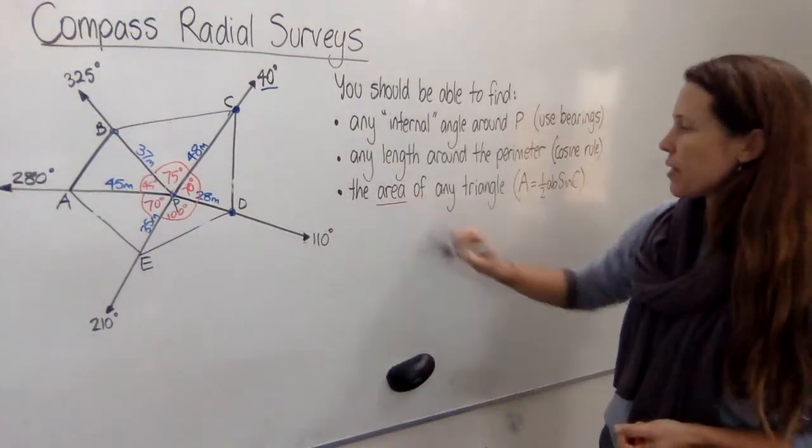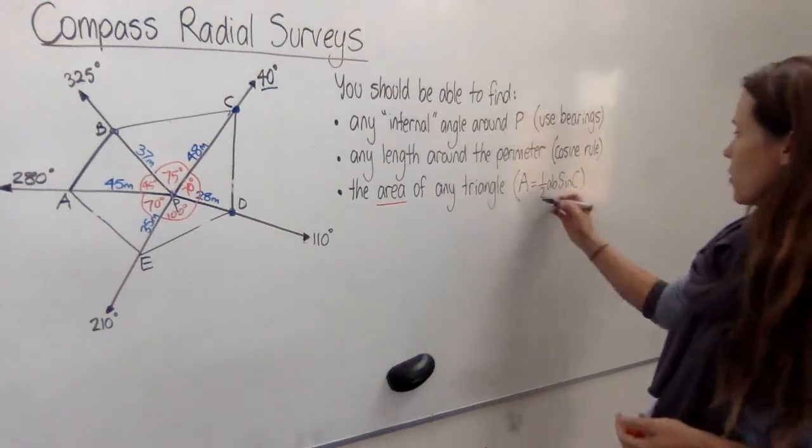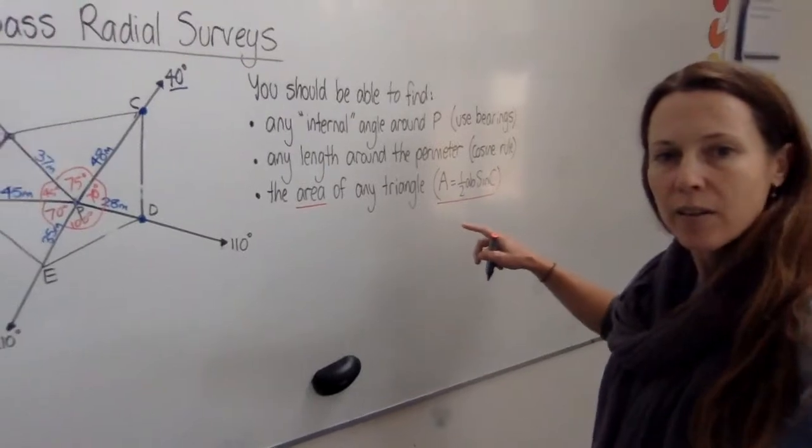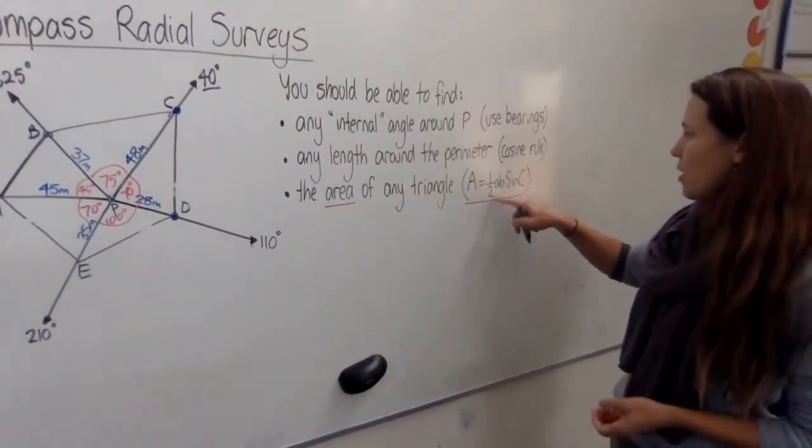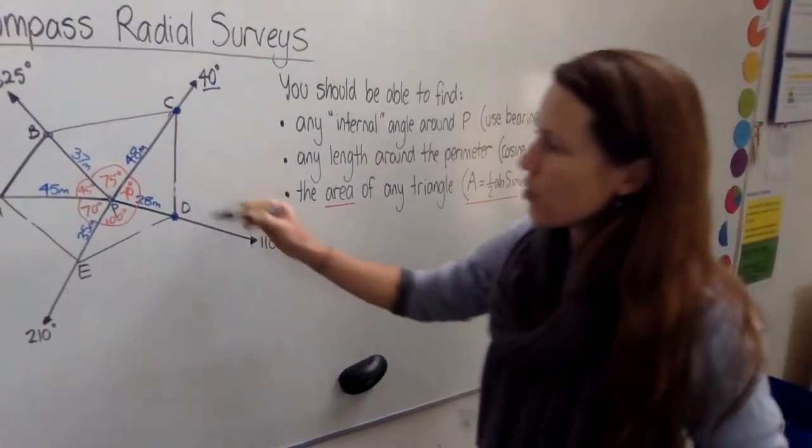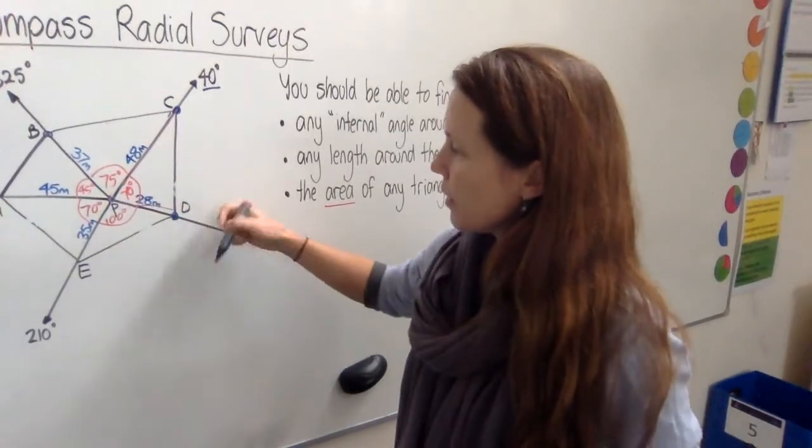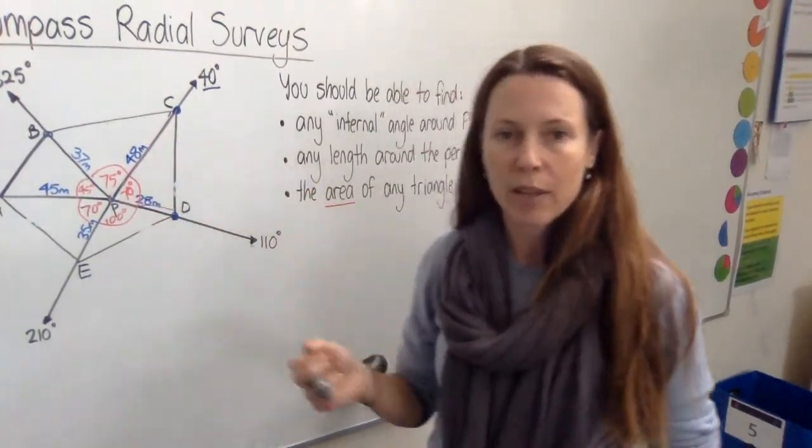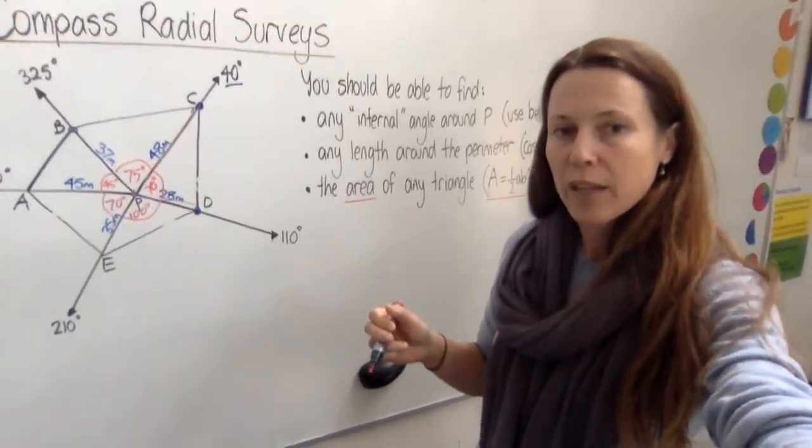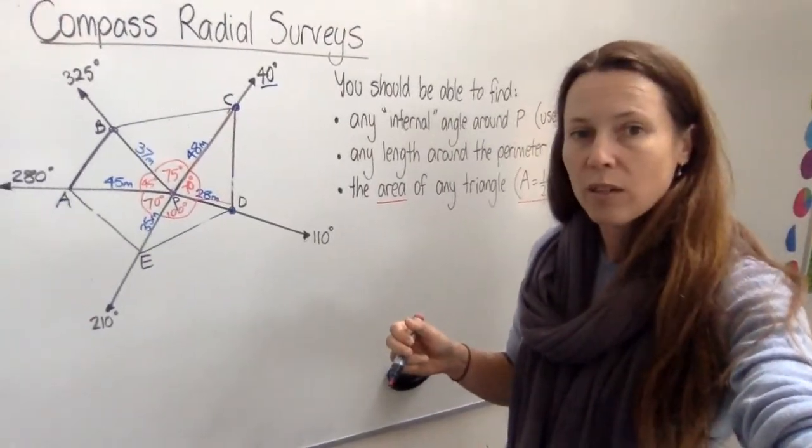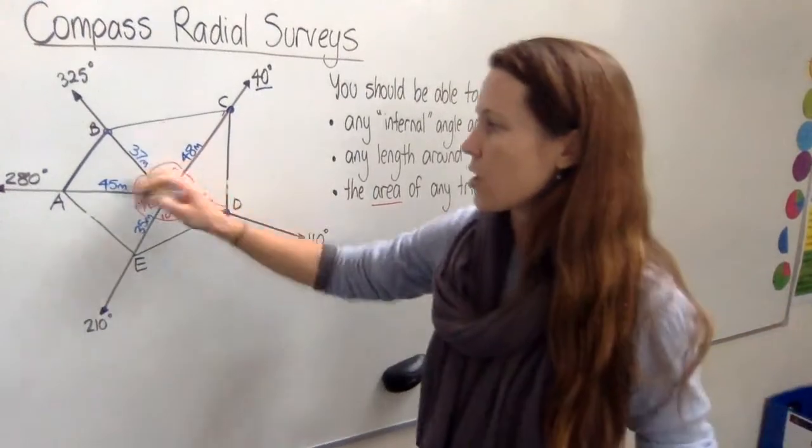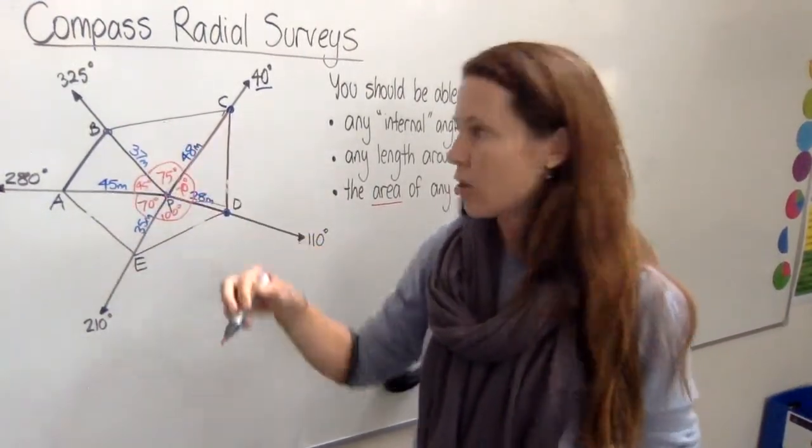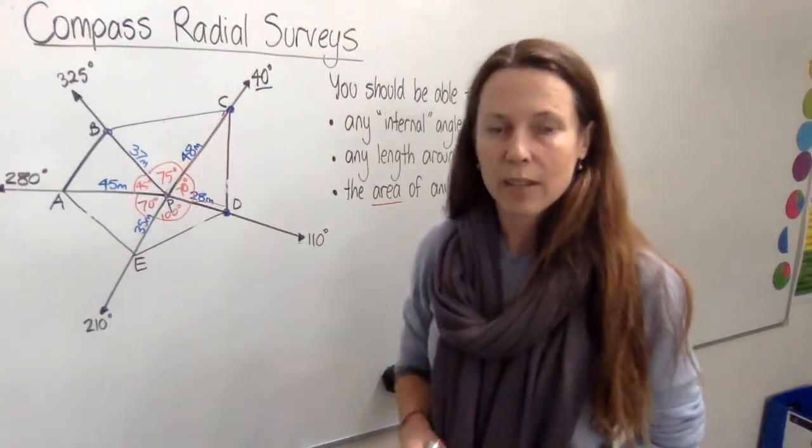You can also find the area of any triangle using that formula that we've already used. Area equals half AB sine C. If you know both of these lengths and you've got the angle between them, then you can go ahead and apply that formula. Now if you can work out the area of any of these triangles, and in fact all of them, then you can just add those up and see the size of the piece of land in square meters, which you can then convert to acres or hectares or whatever you need.